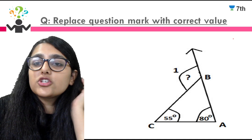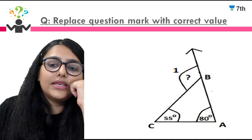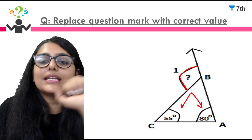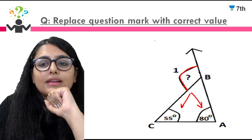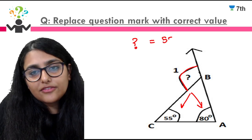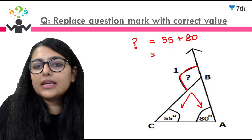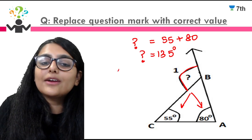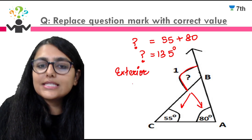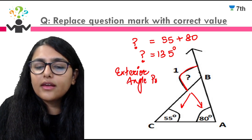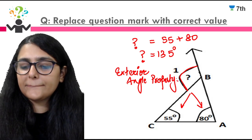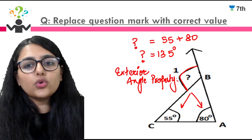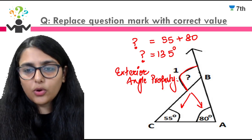Replace the question mark with the correct value. Here side AB has been extended, so the angle formed outside is our exterior angle. Its measure equals the sum of the interior opposite angles: question mark = 55 + 80 = 135 degrees. Always mention the property used — here it is the exterior angle property.